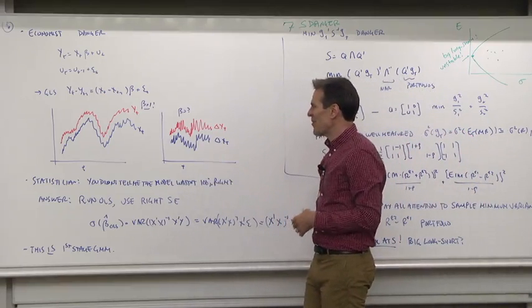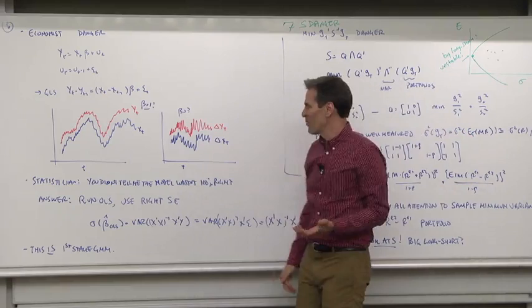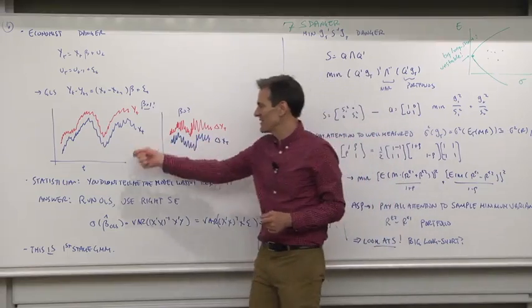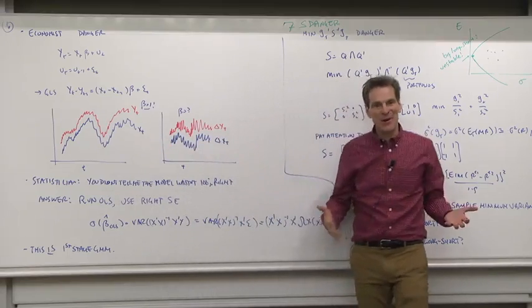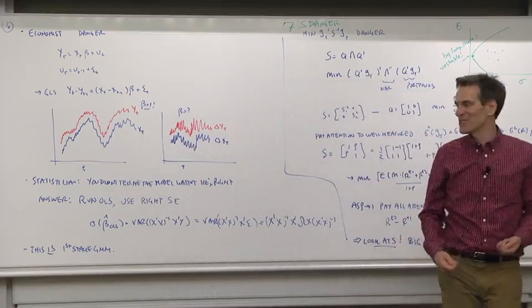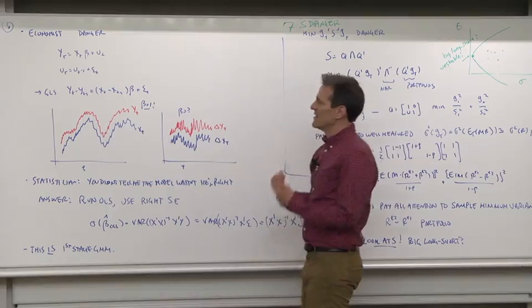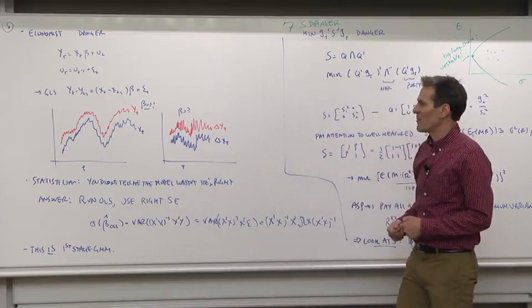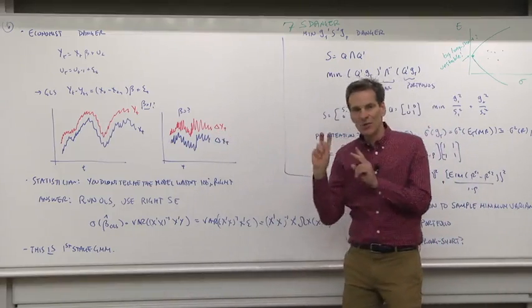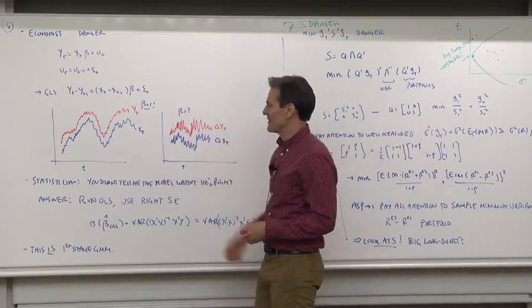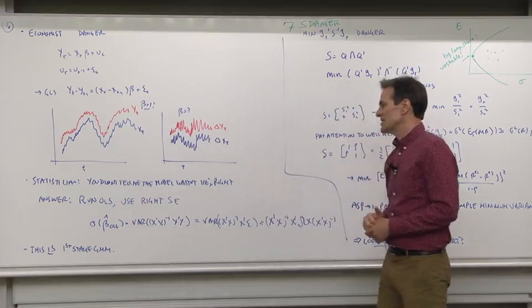The statistician looks at that and says, oh, you didn't tell me the model wasn't 100% right. And I'd get a different answer from first differencing it than living in levels. Well, that's where we are. Our models are not 100% right. It's important to take the models to data along the dimensions that they describe well, and not do things that look like efficiency if the model were 100% true, but in fact leave the story out of the data.